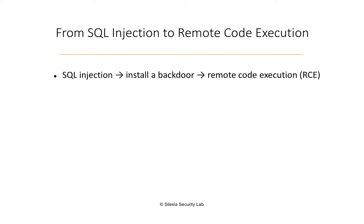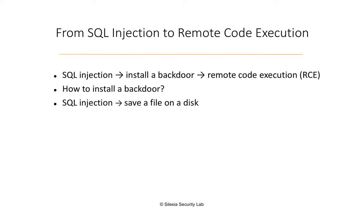It sounds cool but the question is how to install this backdoor. Maybe this is the most challenging part in the entire process. It turns out that as a result of SQL injection we can save a file on the disk, and for this purpose we can use the INTO OUTFILE statement. So INTO OUTFILE and then in between the apostrophes we specify the file — for example, /var/www/rce.php.